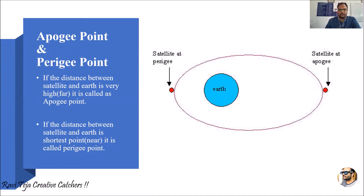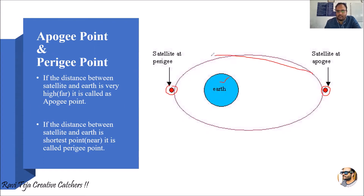We all know that satellites travel in an orbital path around the earth in an inclined or elliptical manner. If you see here, this is an earth — consider this as an earth — and there are two satellites which are revolving around the earth in an elliptical orbit.